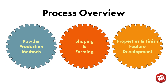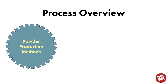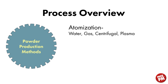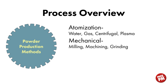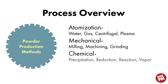Powder production methods start with atomization — water, gas, centrifugal, and plasma atomization. Mechanical methods include milling, machining, and grinding. Chemical production methods include precipitation, reduction, reaction or vapor deposition, and electrolytic deposition.